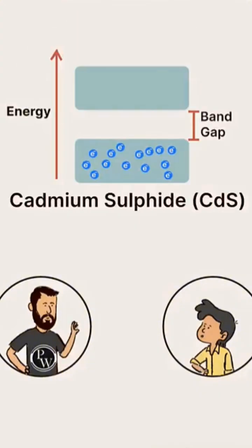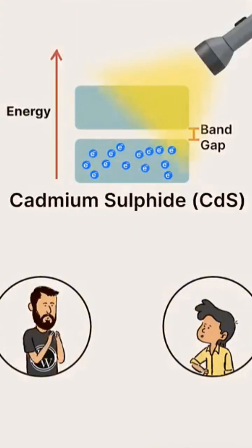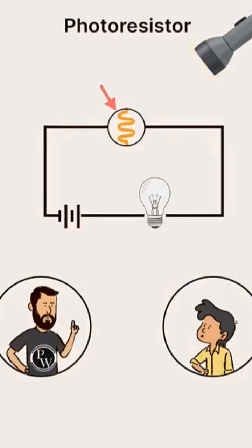In some semiconductor materials like cadmium sulfide, the band gap is very small. With just a bit of light, electrons absorb enough energy to cross it. These are used to make photoresistors whose resistance falls under illumination.